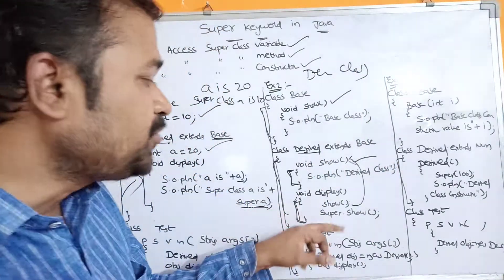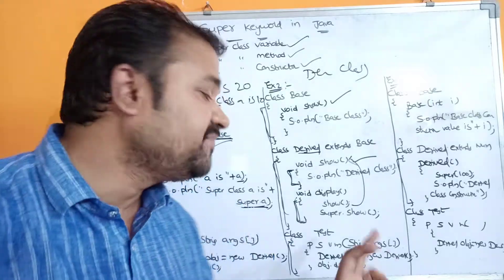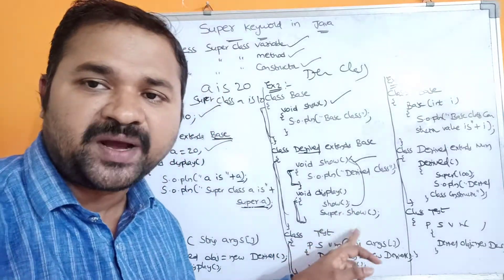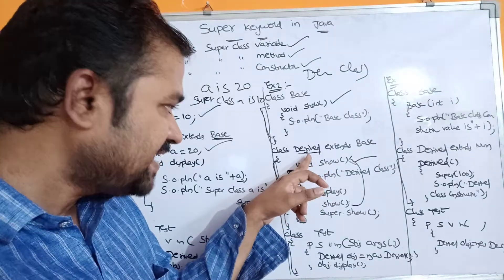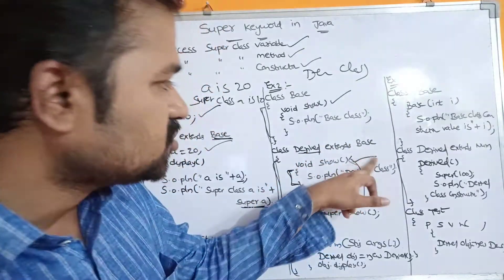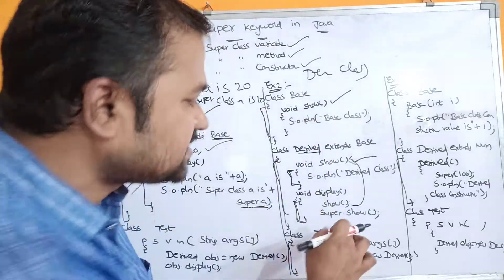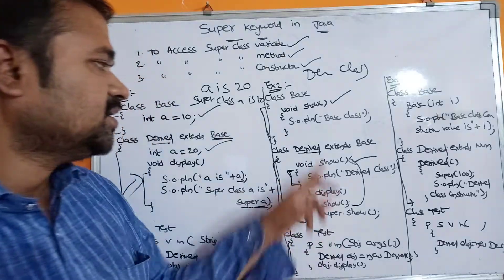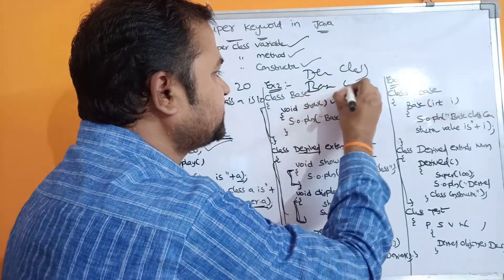If we want to access the super class show method, we have to use the keyword super: super.show(). Here the subclass is derived, and for the derived class the super class is base. So the control goes to the base class and the show method there will be called. Its body prints "base class", so that message will be printed.